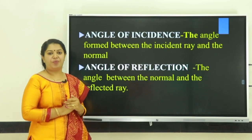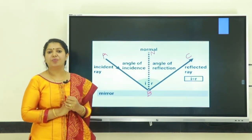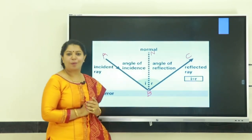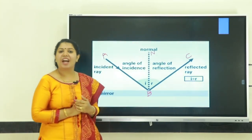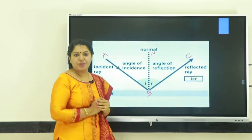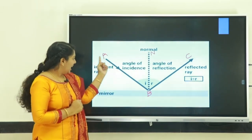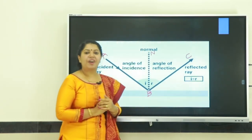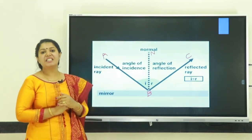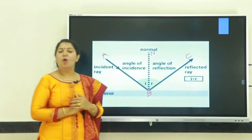Let's study about the laws of reflection. There are two laws of reflection. The first law is: angle of incidence is equal to angle of reflection. Angle of incidence means the angle between the incident ray and the normal. Angle of reflection means the angle between the normal and the reflected ray. The second law is: the incident ray, normal, and reflected ray all lie in the same plane. That means ray AB, ray BC, and ray BN all lie in the same plane.